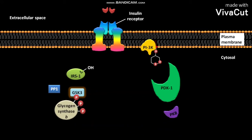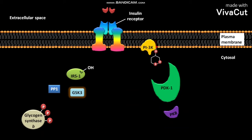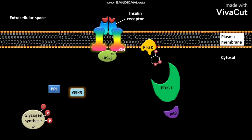But when the hormone insulin binds to the insulin receptor present in the plasma membrane of a cell, a tyrosine protein kinase in the receptor is activated. The activated tyrosine protein kinase in the receptor then phosphorylates IRS-1 in its tyrosine amino acid.